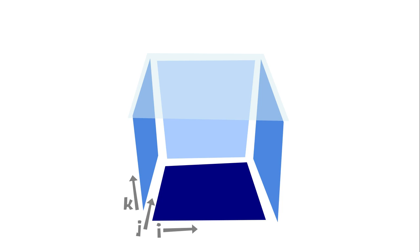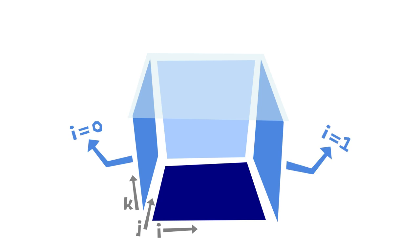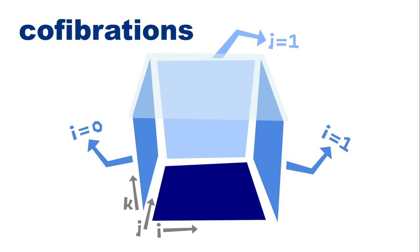So, the composition we saw earlier was indexed by three intervals. Let's label the indexes i, j, and k. With these labels on dimensions, we can also label the walls. The one on the left, for example, is labeled as i equals to 0, because the wall is at the 0 end along the i dimension. The opposite wall is then labeled as i equals to 1, following the same logic. The back wall is labeled as j equals to 1, because it is at the 1 end along the j dimension. These wall labels are called cofibrations, and are the key to our Plan C.